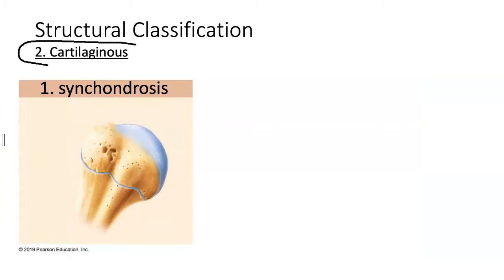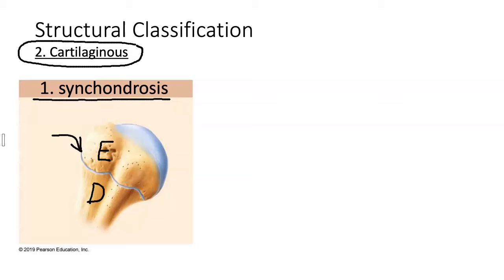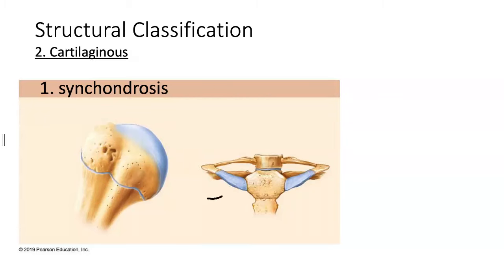A second category of joints are cartilaginous joints, where cartilage joins the two bones. One type is a synchondrosis, which can occur where the epiphysis meets the diaphysis with a pad of hyaline cartilage called the epiphyseal plate. Another example of a synchondrosis is where the ribs anchor onto the sternum. To summarize, in a synchondrosis the two bones are joined by hyaline cartilage.